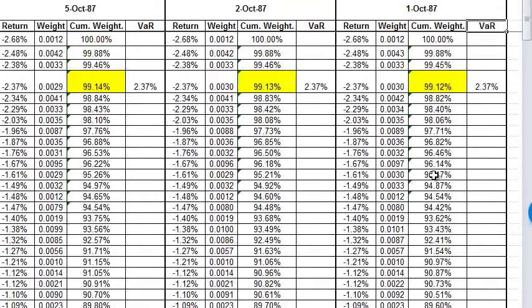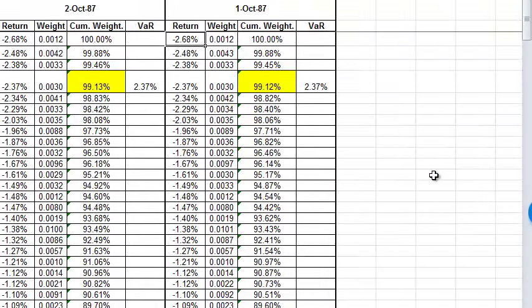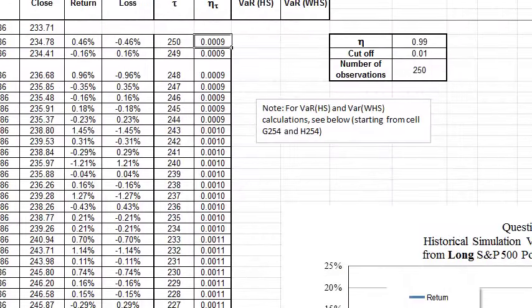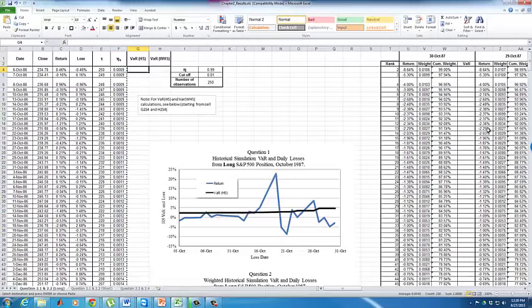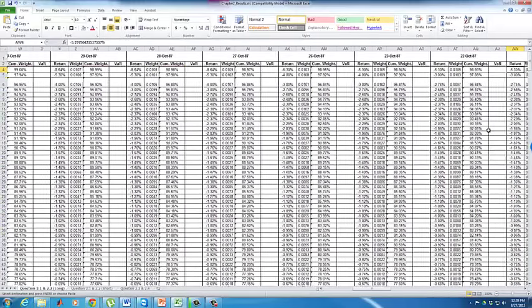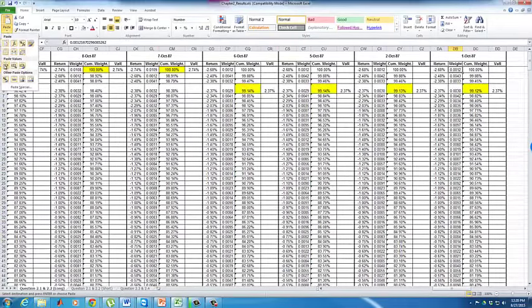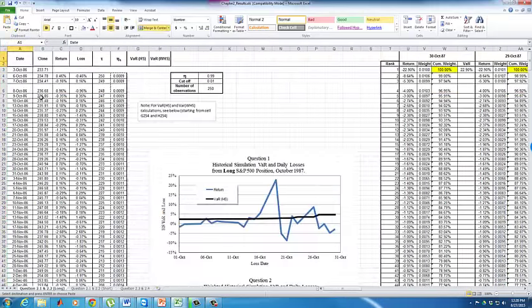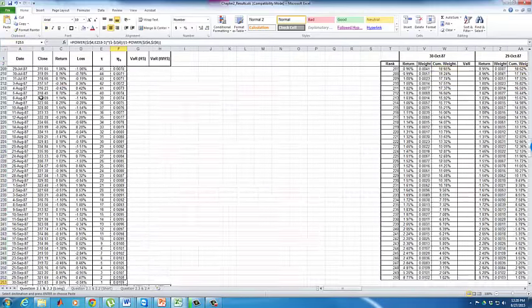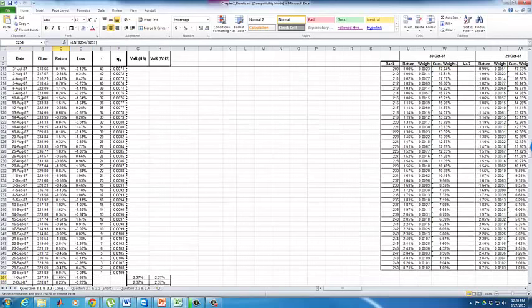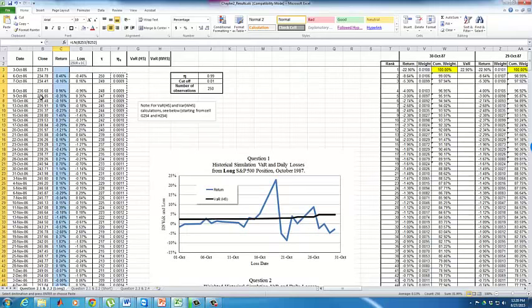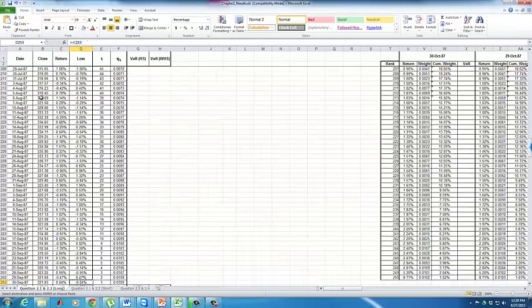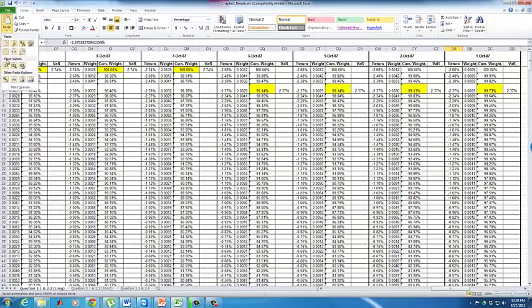On the right-hand side, I have the return and the weight. Before computing this, we first copy the weights and paste them as values. Then I do exactly the same thing with the last 250 returns. For October 1st, I compute the ones for the long portfolio and paste again as values.